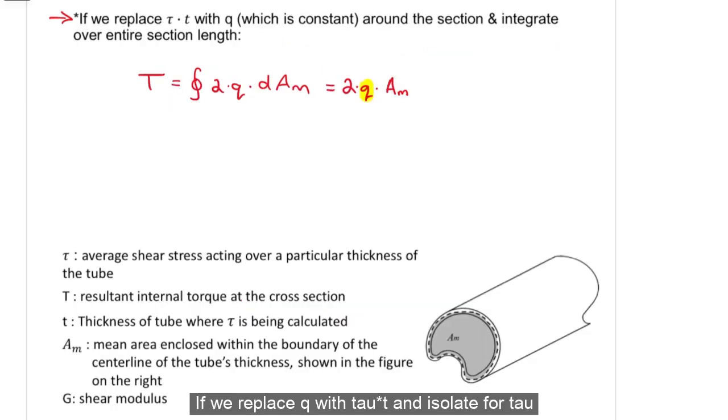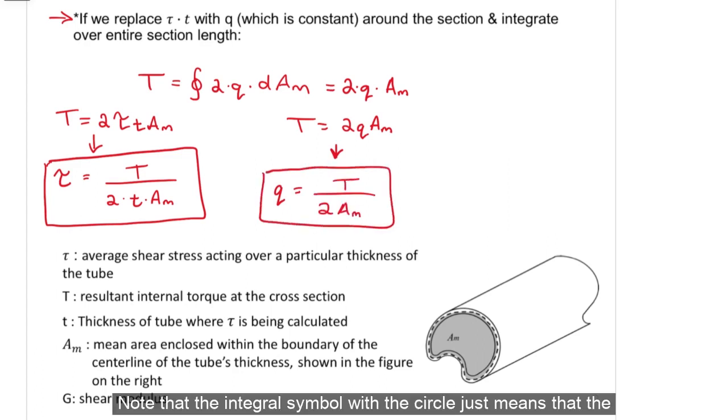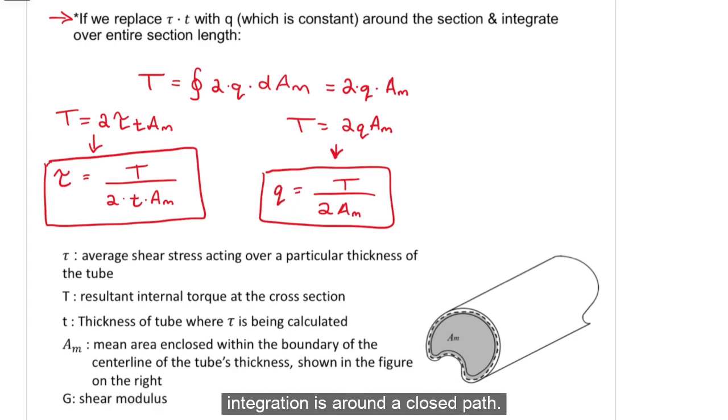If we replace q with tau times T and isolate for tau, we get tau equals to this equation. If we isolate for q in this equation, we get q equals to this. Note that the integral symbol with the circle just means that the integration is around a closed path.